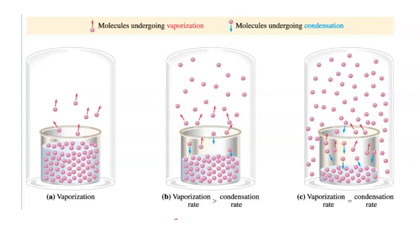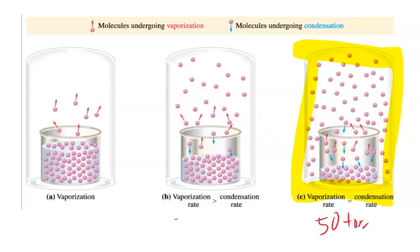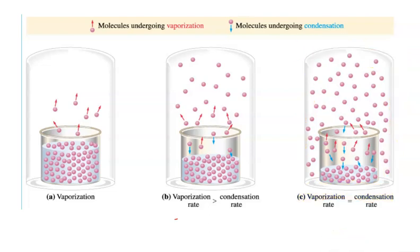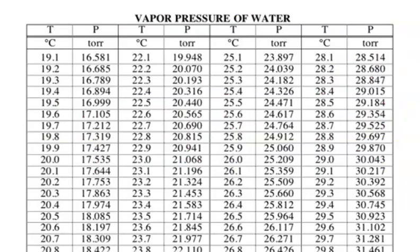Vapor pressure is the pressure of the gas above its liquid in a sealed container at equilibrium. If you measure it and it's, say, 50 torr, if you come back tomorrow and seal up the same liquid at the same temperature — that's the key — it would be 50 torr again, because it's a constant. You can just look these values up.